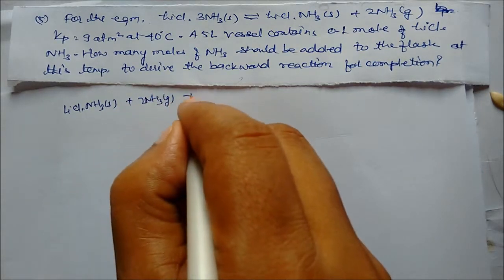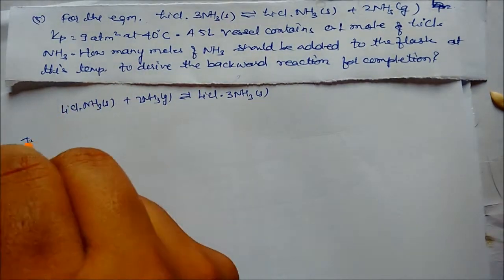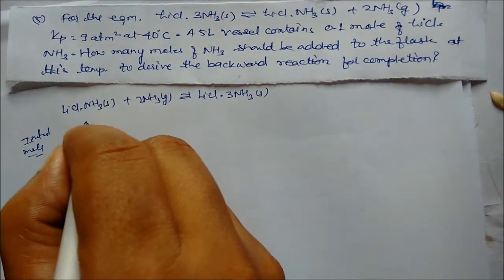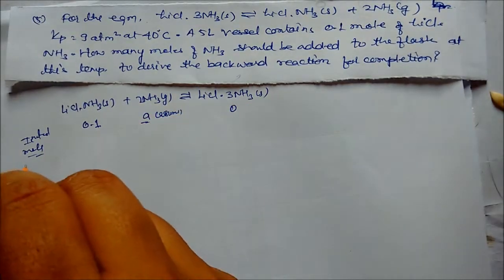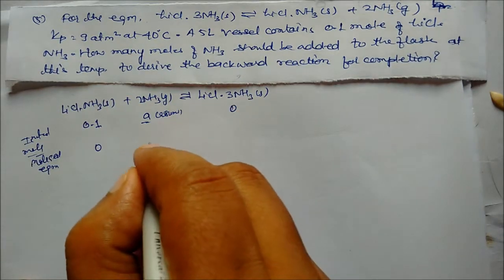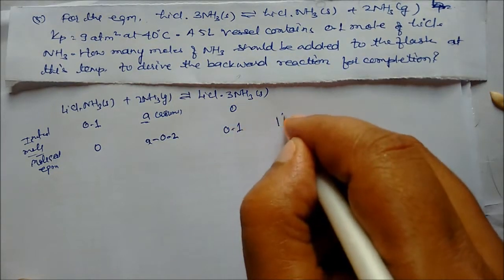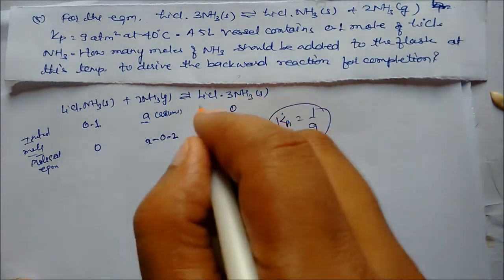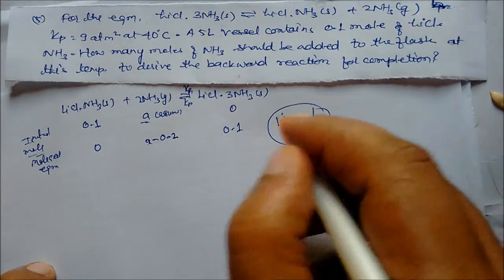The reverse reaction is: LiCl (solid) + 3NH3 (gas) → LiCl·3NH3 (solid). Initial moles of LiCl = 0.1. Let 'a' moles of ammonia be added. At equilibrium, moles of NH3 remaining = a - 3×0.1 = a - 0.3... actually a - 0.2 as derived. For the reverse reaction, the new Kp1 = 1/Kp = 1/9.